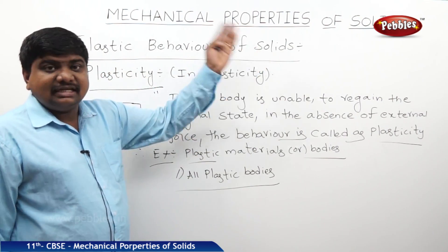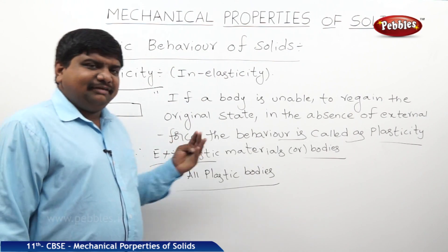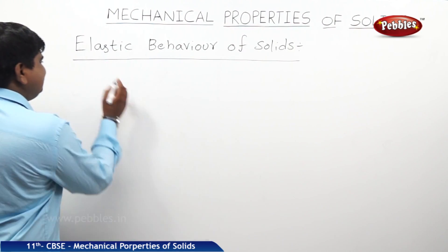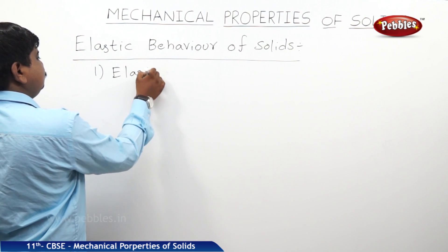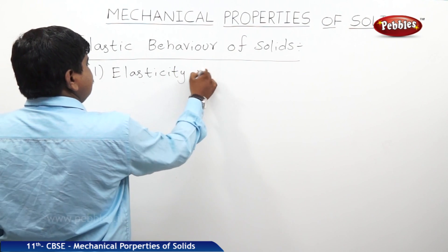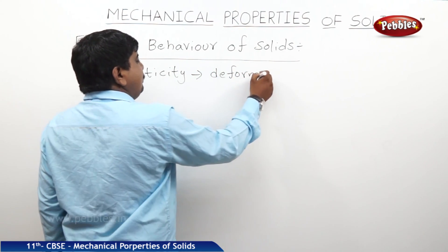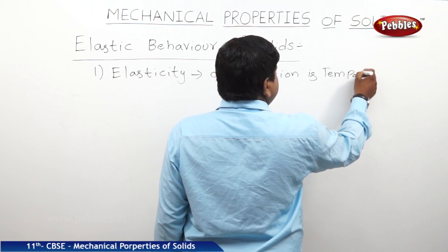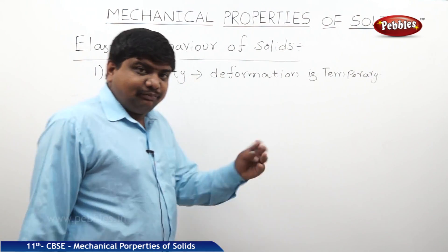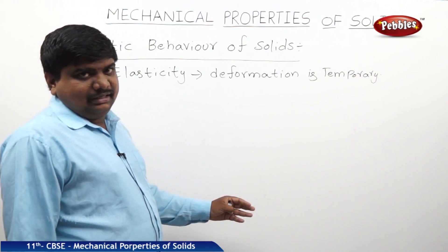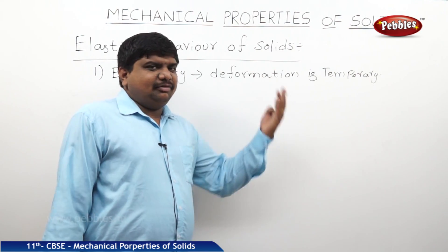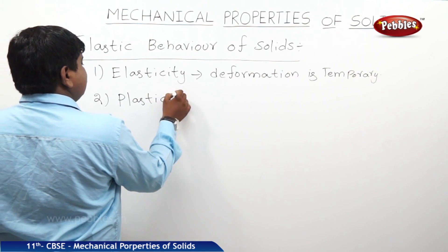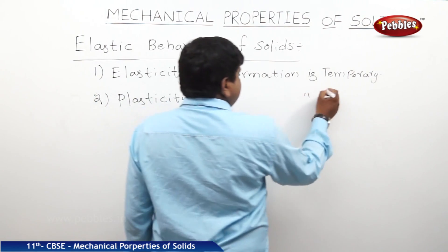These are the two major behaviors of solids under the action of force. The key difference between elasticity and plasticity is: in elasticity, deformation is temporary — deformation meaning change in the magnitude of a body. But in plastic bodies, deformation is permanent. Even a small amount of force causes permanent deformation. So in plasticity, the deformation is permanent.